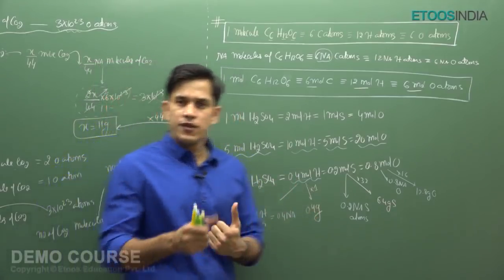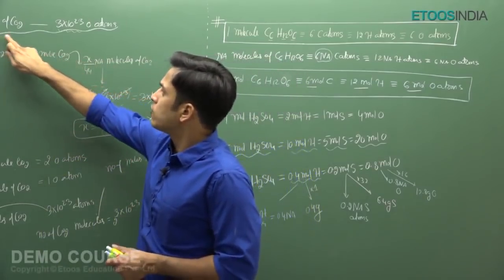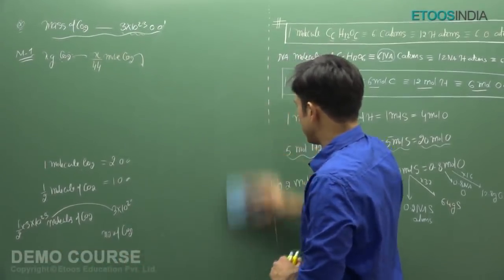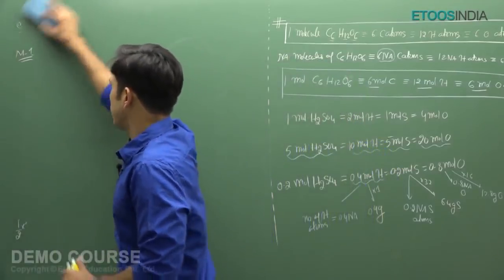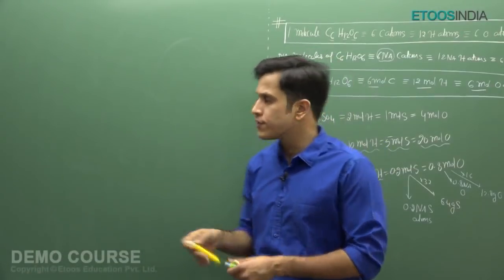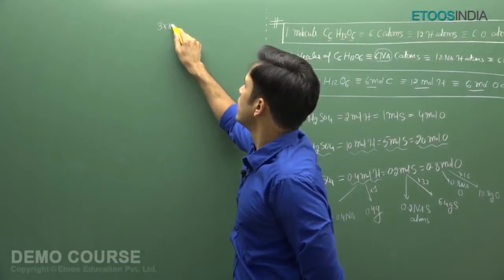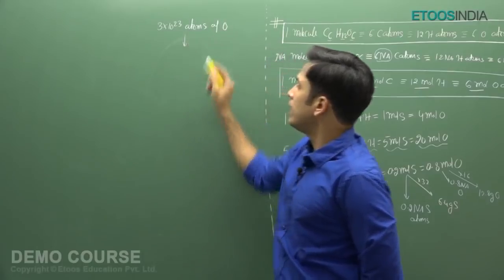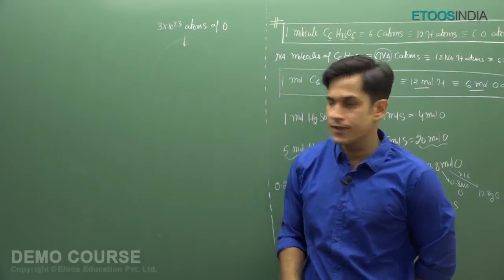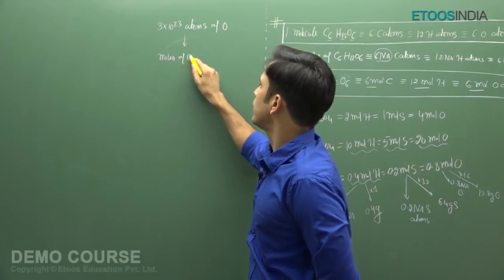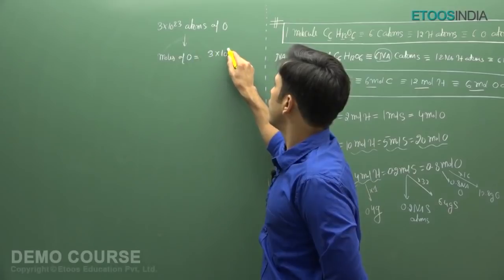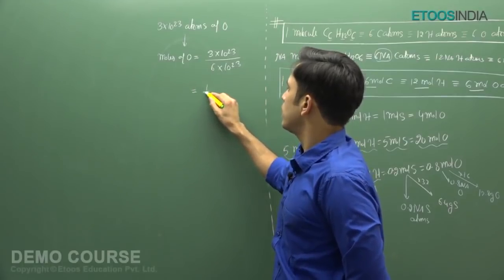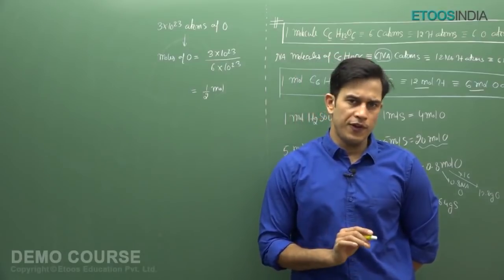We can also go in reverse, as with the original question: calculate mass of CO2 which contains 3 into 10 to the power 23 oxygen atoms. We have already covered 2 methods. Now we apply this new method. You have 3 into 10 to the power 23 atoms of oxygen. First, calculate moles of oxygen atoms by dividing by Na, 6 into 10 to the power 23, giving 0.5 moles of oxygen atoms.